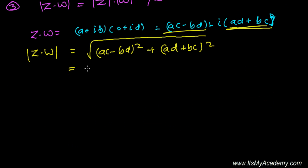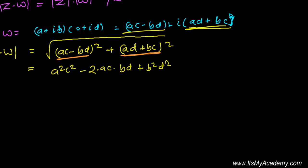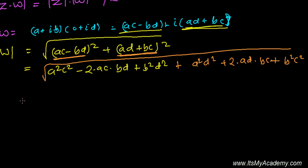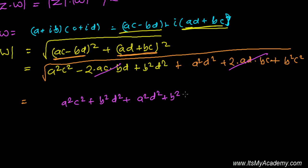Using the formula (A minus B) squared equals A squared minus 2AB plus B squared, and (A plus B) squared equals A squared plus 2AB plus B squared, we expand both terms. The 2ACBD terms cancel — one is positive and one is negative — so we are left with A squared C squared plus B squared D squared plus A squared D squared plus B squared C squared, all inside the root.